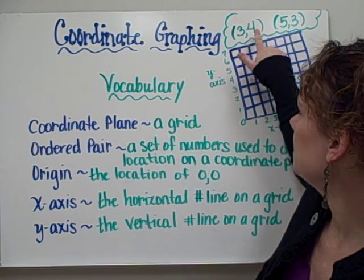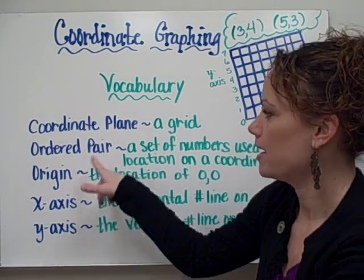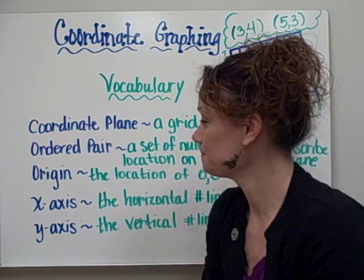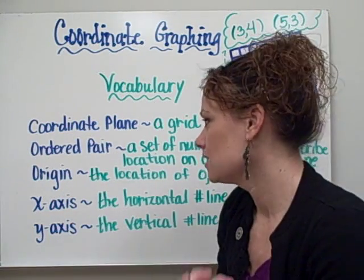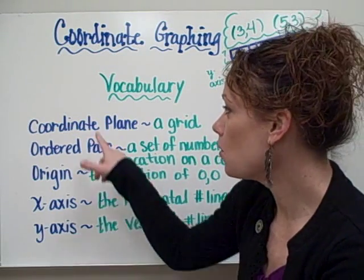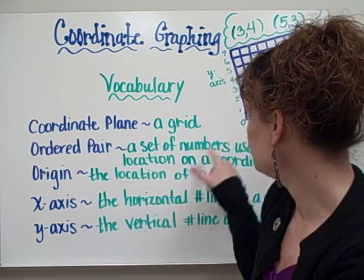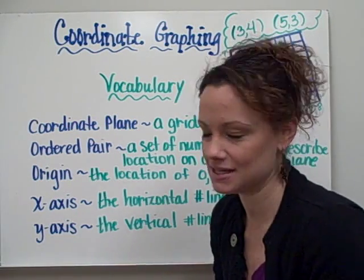So for example, 3, 4, wherever you would plot that point, that ordered pair would let you know where to put that point. Our next word is the word origin. Origin means the beginning. So for our grid system, for our coordinate plane, the location of 0, 0, right here in the corner, would basically be the beginning of our grid system.